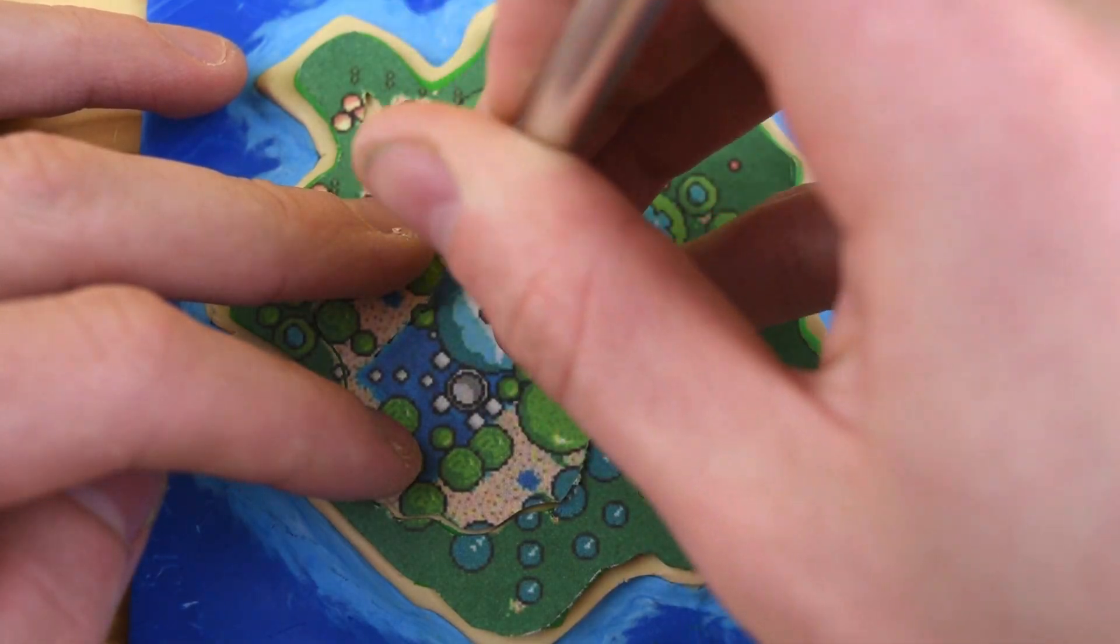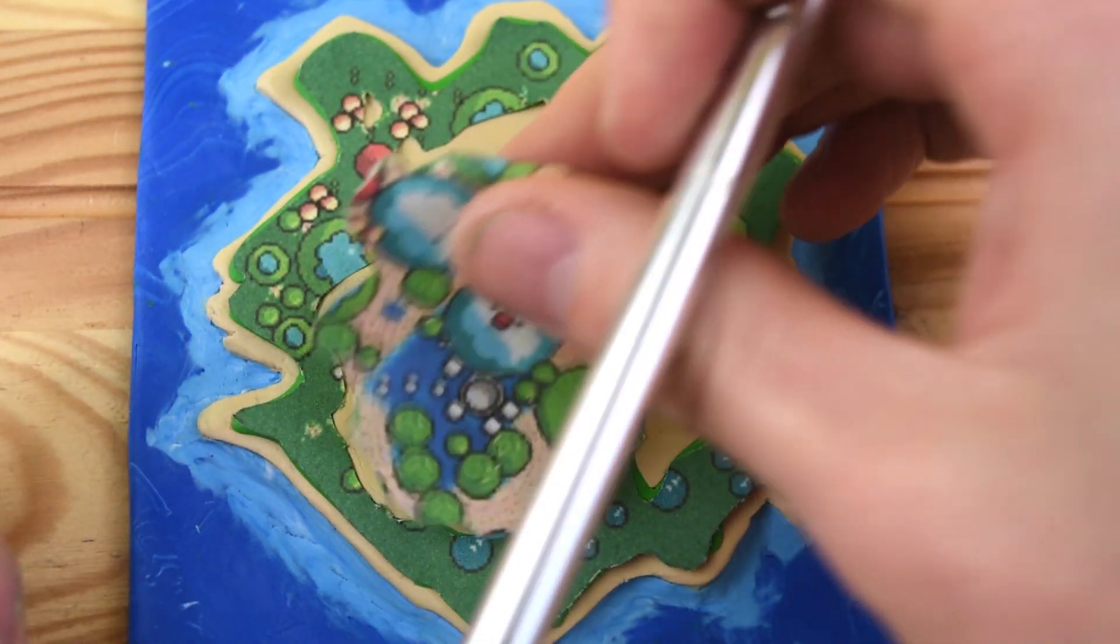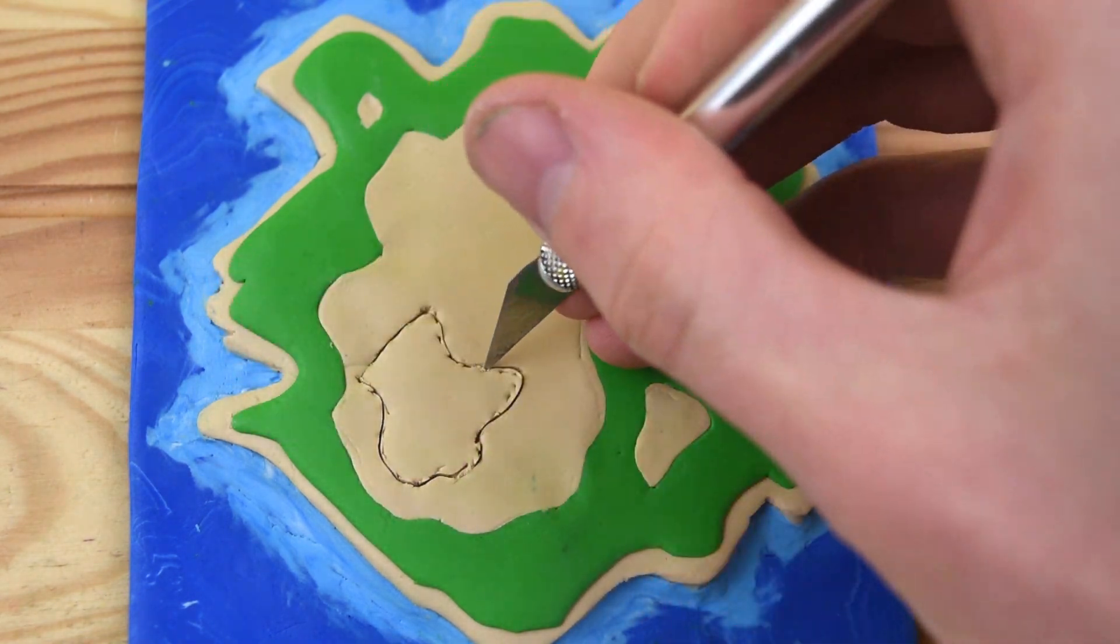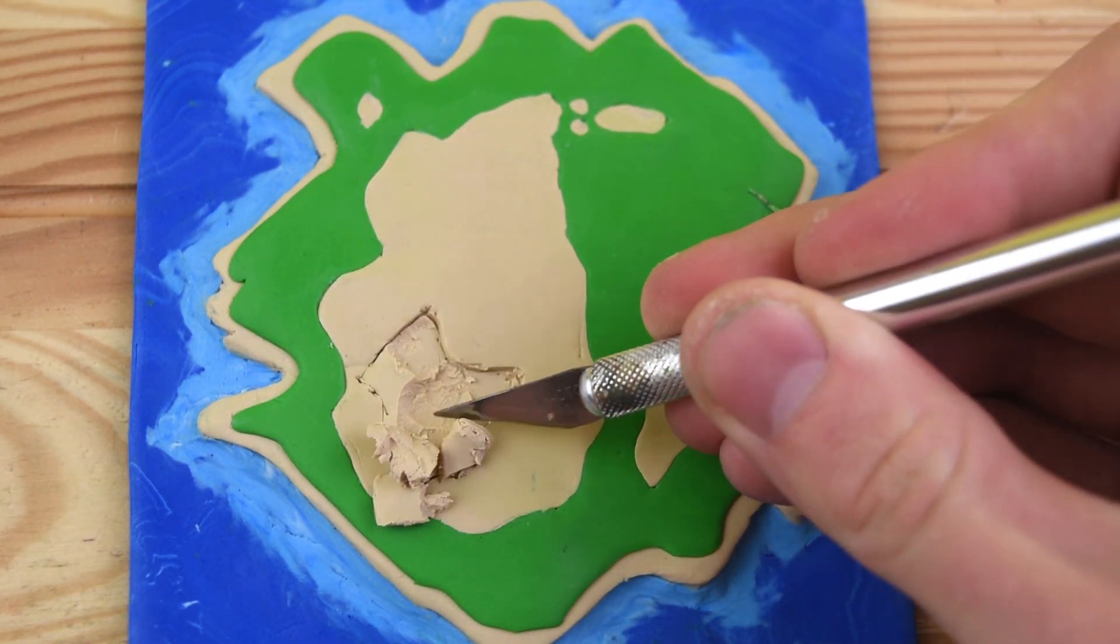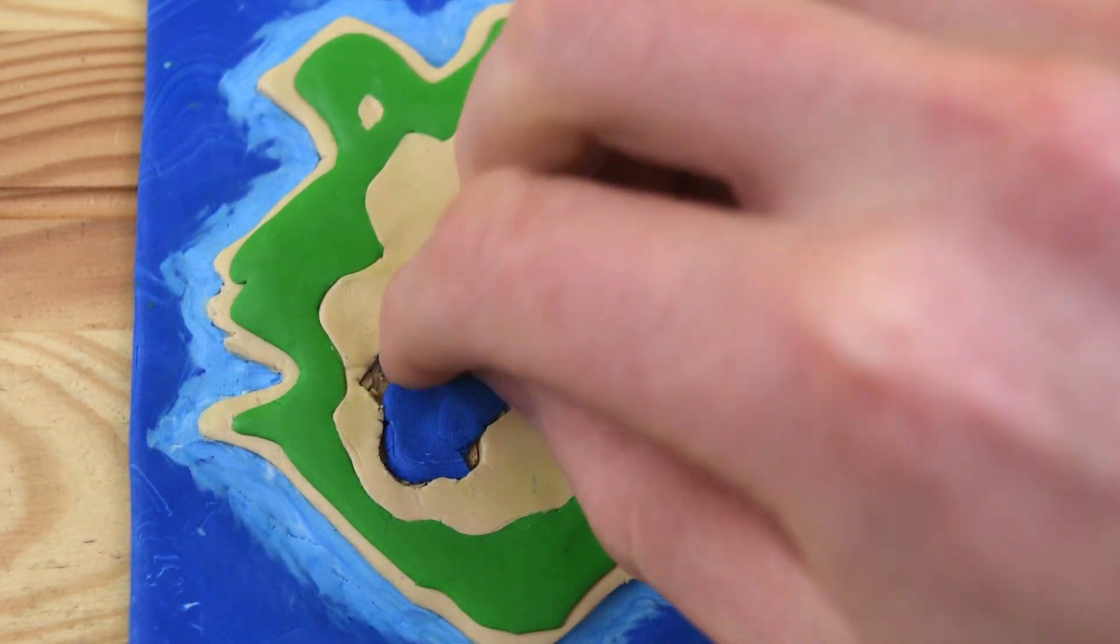Now that we have all of our sand filled in, we can start working on the water. We need to remove this tan section, and we'll take some more of that water that we had, the blue and white mixture from the main layer, and we can stick it in there for the lake.